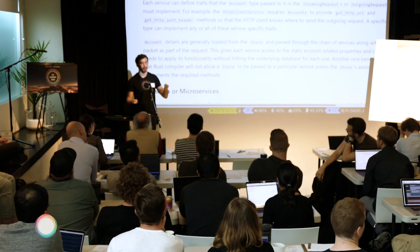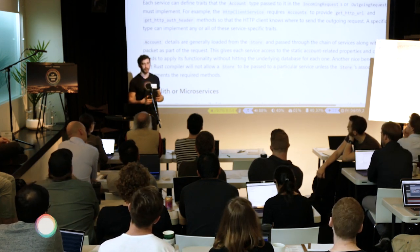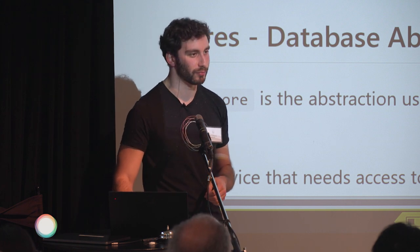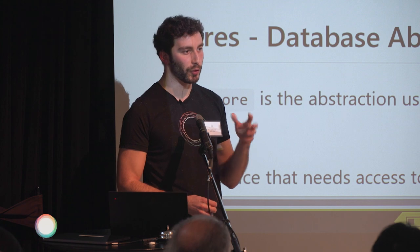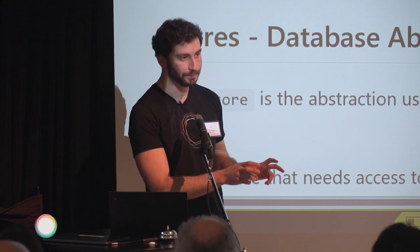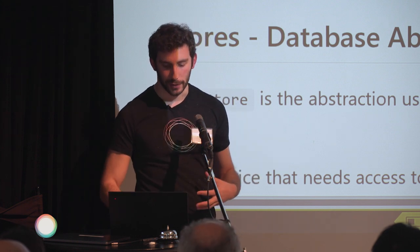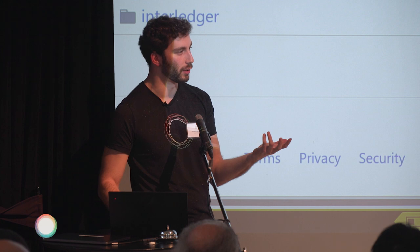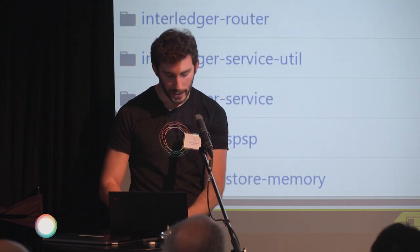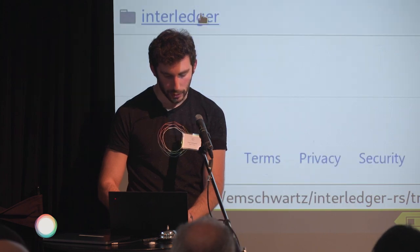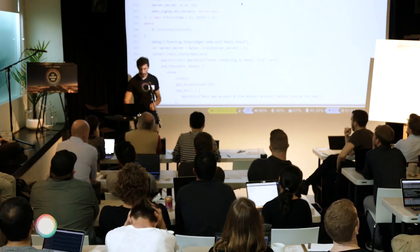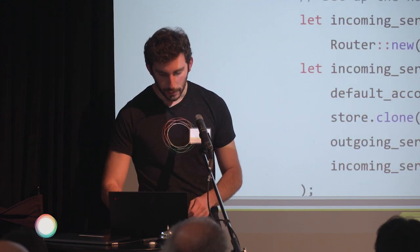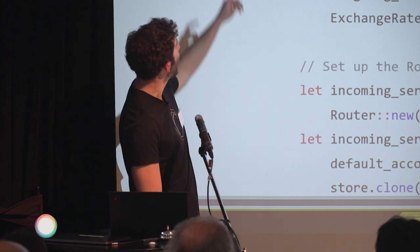Are the services chained in one process or doing RPC as different processes? There's a section in the architecture called 'monolith or microservices' — the cool thing is you can have it either way. If you want to run it as one big monolith in a single process, that's what the interledger node bundle is. I'll show you how that is set up.